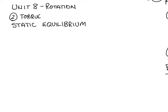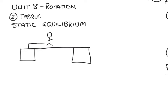In one example, we have a beam supported by two pylons, with a man standing on the beam at some distance from the first pylon — distance value d. In static equilibrium problems, nothing is moving; everything is standing perfectly still. If there's no acceleration, there's therefore no net torque. We can set the net torque equal to zero and sum up the other torques acting on the system. By convention, we'll pick the left-hand side as our axis of rotation.